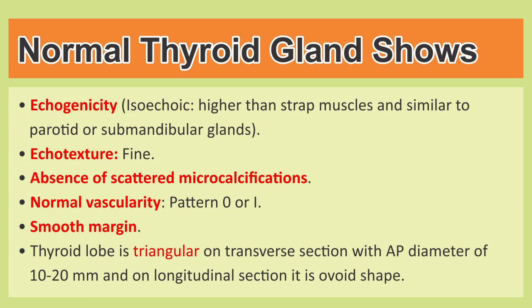The second characteristic is ecotexture, and it appears fine in the normal thyroid gland. Scattered micro-calcifications are not present. Normal thyroid gland will show the vascularity of pattern 0 or pattern 1, and the margins of the thyroid gland are smooth.